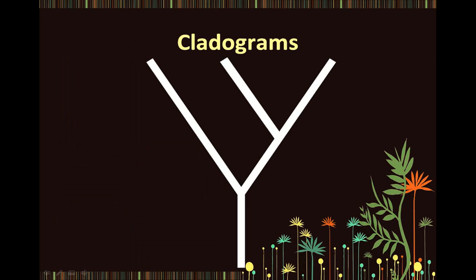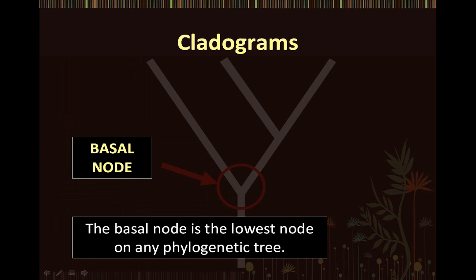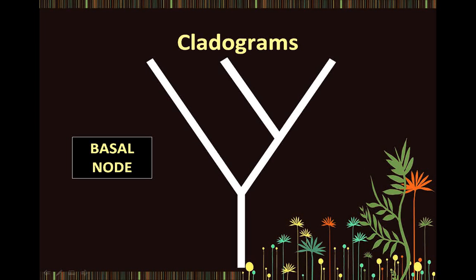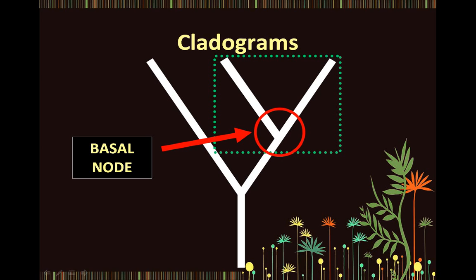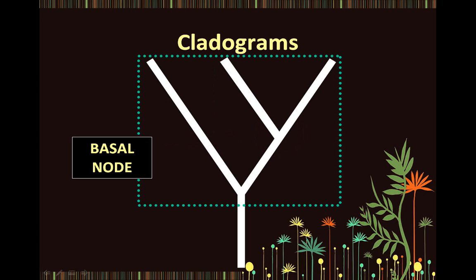Back to discussing cladograms — the basal node is the lowest node on any phylogenetic tree. Keep in mind that trees can be nested within trees. So if we were looking at the phylogenetic tree on the top right-hand corner, the basal node would be the lowest node on that tree. However, if we were considering the entire cladogram as a phylogenetic tree, then the basal node would be the lowest node on the entire phylogenetic tree.